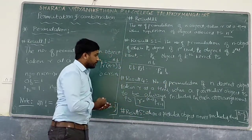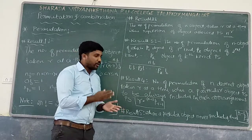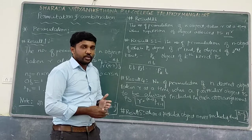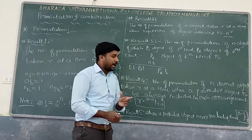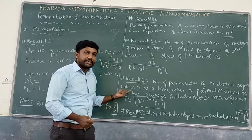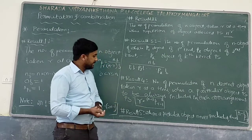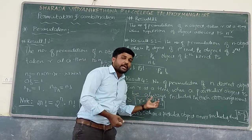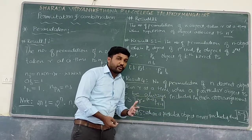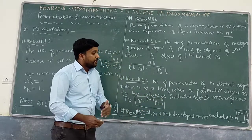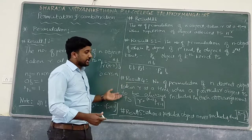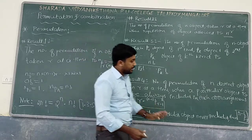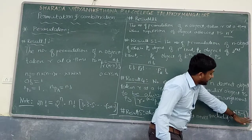Result 4: The number of permutations of n distinct objects taken r at a time, when a particular thing is always included in each arrangement, is given by r × (n−1)P(r−1). If a particular thing is never included in each arrangement, then the permutation is given by (n−1)Pr.